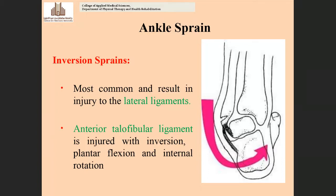The first type of ankle sprain is the inversion sprain. If the foot goes into an inverted position, there is a possibility of sprain in some ligaments in the ankle region. The most common result is injury to the lateral ligaments of the ankle joint. The ligament usually involved is the anterior talofibular ligament, which gives support to the lateral aspect of the ankle joint.